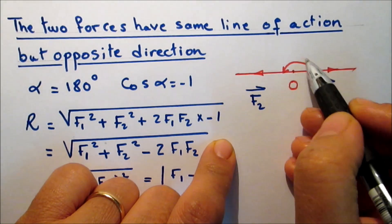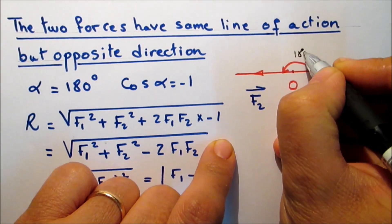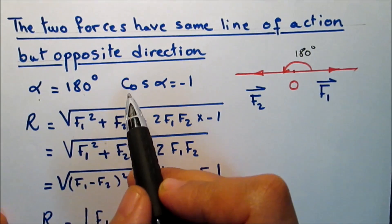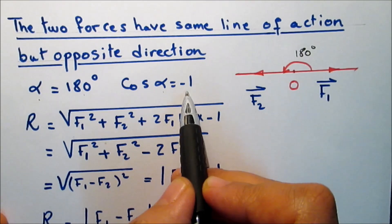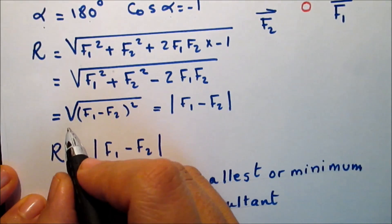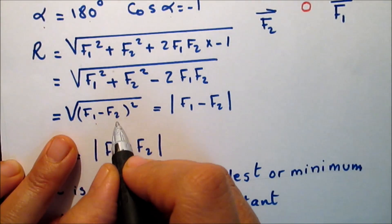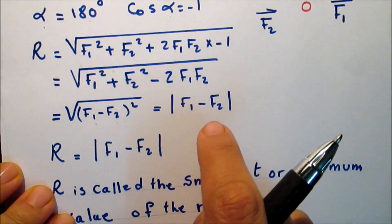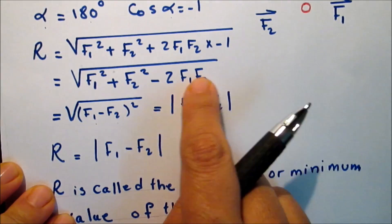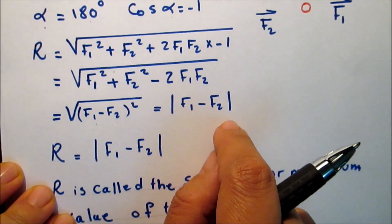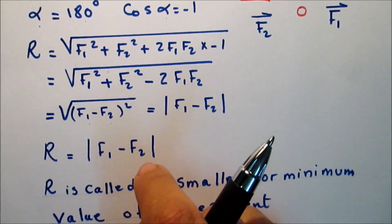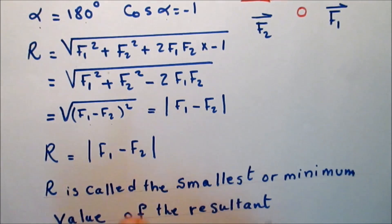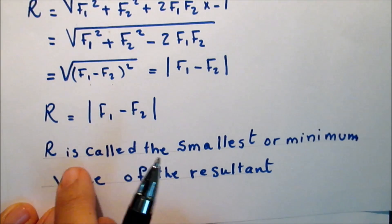If alpha is 180 degrees, cosine alpha is negative 1. In this case the resultant equals the square root of (F1 minus F2) squared, so the resultant equals the absolute value of F1 minus F2. To remove the absolute value sign, simply assume that F1 is greater than F2.